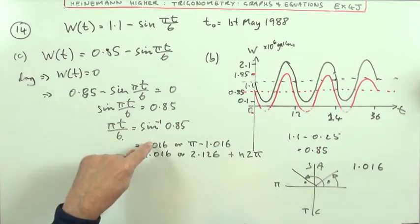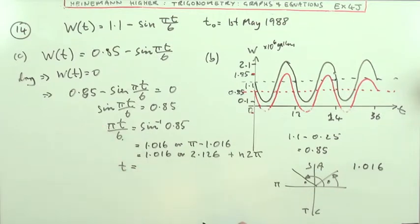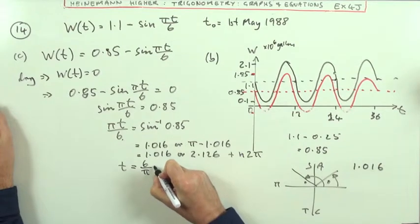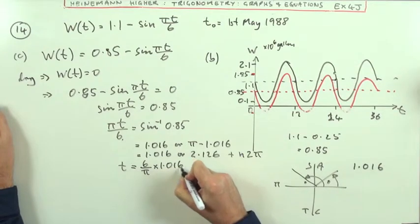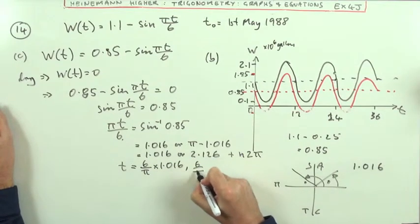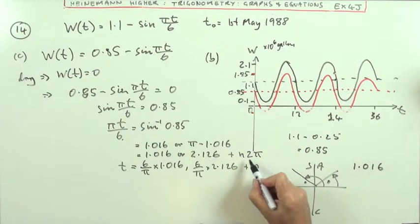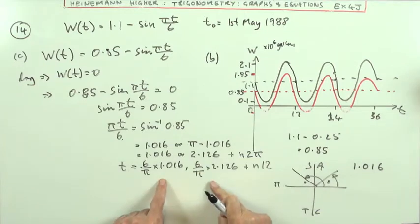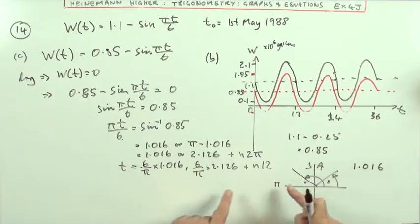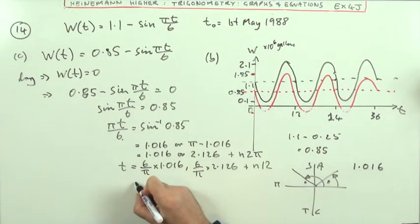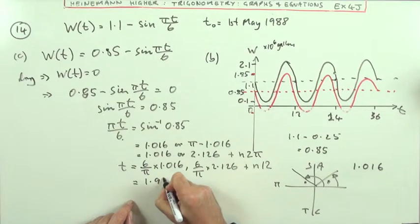Which means t is going to be, I'll need to take the 6 across and multiply and the pi across and divide. So doing that to both of those, I'll show it. So 6 upon pi times 1.016 or 6 upon pi times 2.126. And then 6 upon pi times that, of course, it's going to give you 12, which is what you'd expect. So whatever times I get, I'll get a repeat of that every 12 months, because that's what the model had, every 12 months.